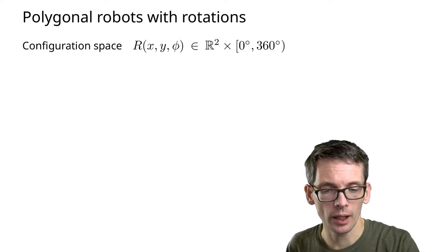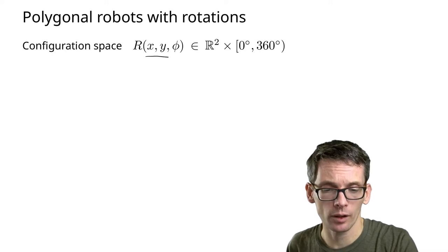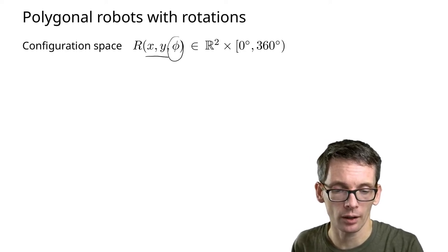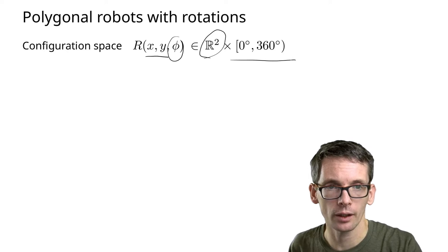The configuration space is XY for the translations and a rotation angle, which means it's R² and then an angle.